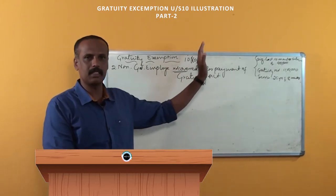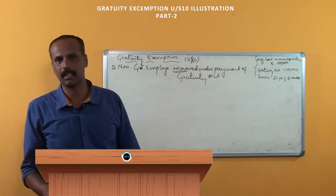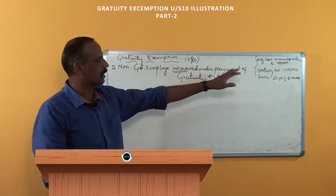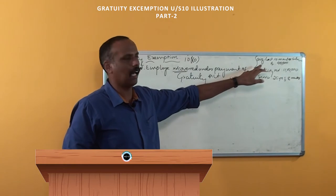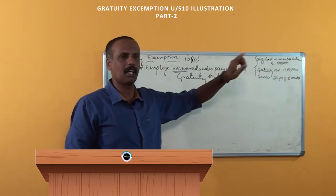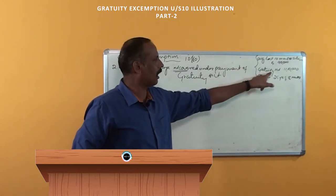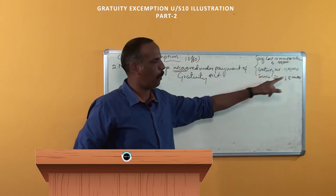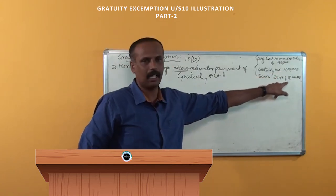As discussed earlier, for this purpose we have to apply the provision under section 10, subsection 10. Here is an example: Mr. X is receiving an average 10-month salary of rupees 90,000 — so one month's salary on the basis of average 10 months is 90,000. He is receiving gratuity of rupees 11 lakh, and his service is 25 years and 8 months.